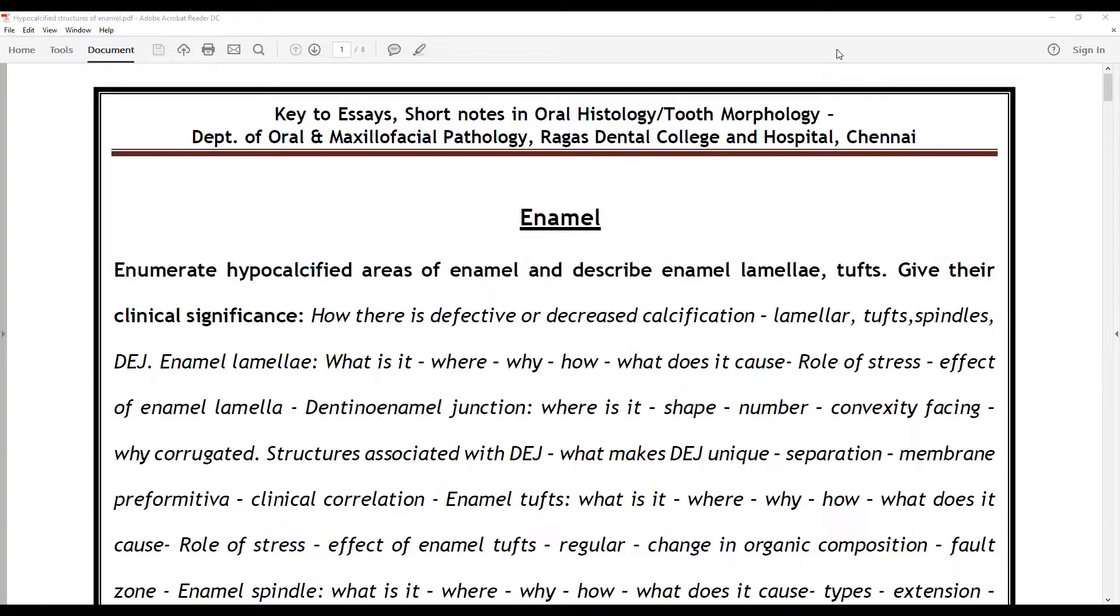Enumerate and discuss the hypocalcified areas of enamel, describe in detail the enamel lamella, and give their clinical significance. This question may come in different forms, but the core is hypocalcified areas of enamel and description of each structure with emphasis on clinical significance. You need to discuss how there is defective or decreased calcification and how structures like enamel lamella, tufts, spindles, and DEJ are formed.